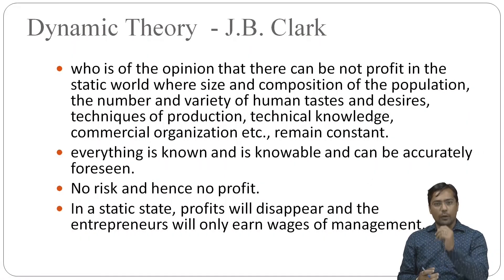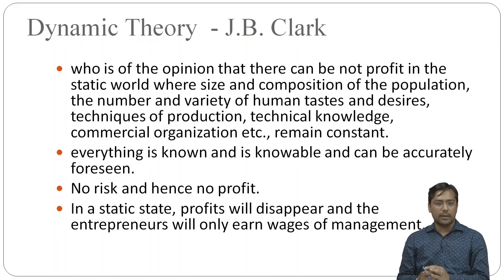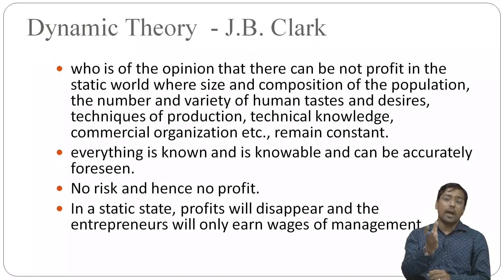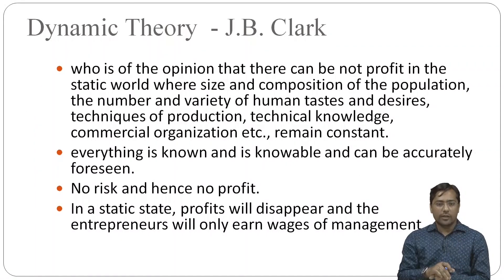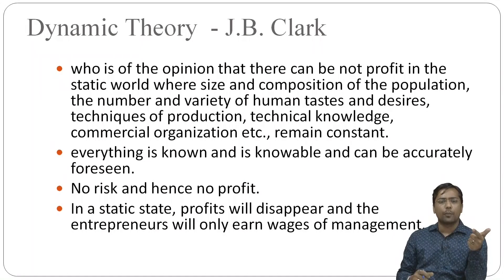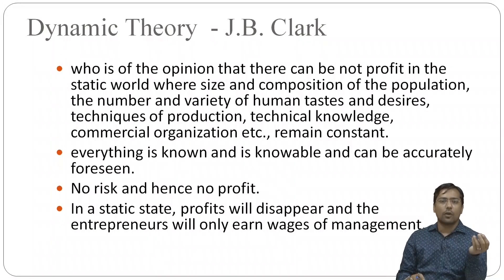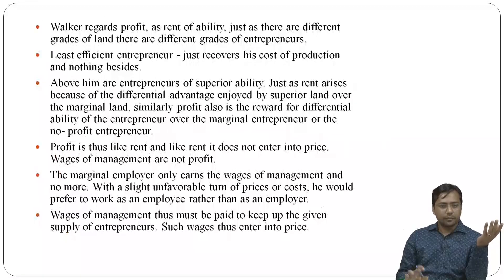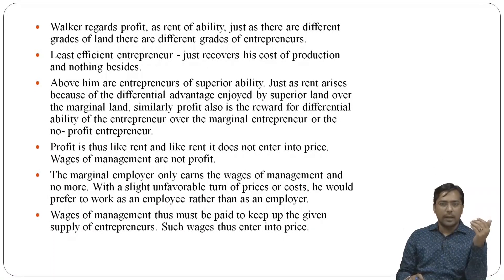According to Walker, profit is the rent of ability — just as there are different grades of land, there are different grades of entrepreneurs. The least efficient entrepreneur will recover only his cost of productions and nothing beside. Rent arises because of differential advantage enjoyed by superior land over marginal land; similarly, profit is like rent and does not enter into price. Wages of management are not a part of profit. J.B. Clark adds: in a static state, if everything is known and can be accurately forecast, there is no risk and hence no profit — entrepreneurs will only earn wages of management.